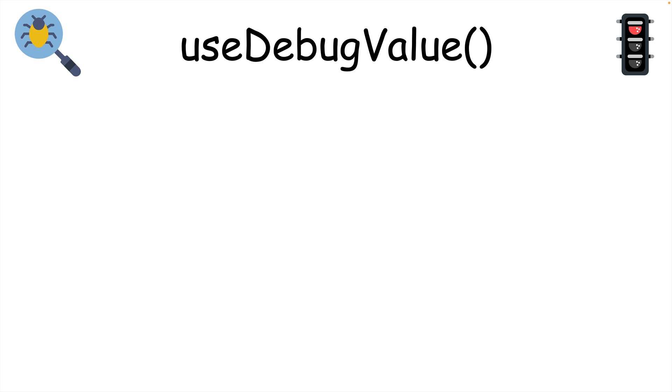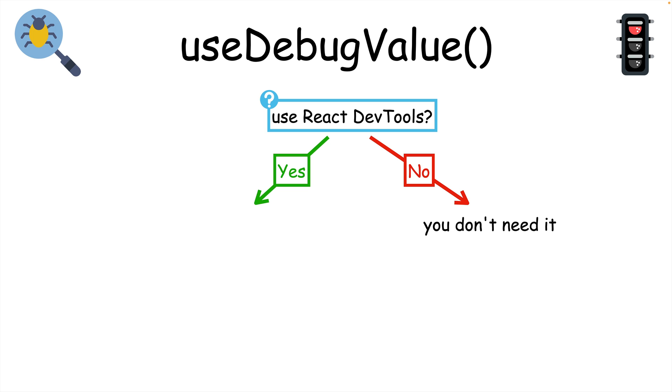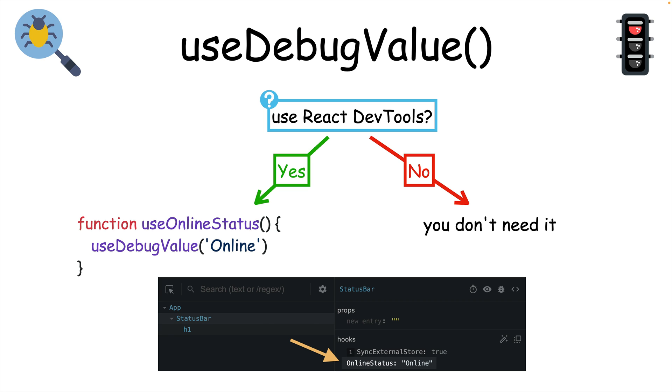The only reason to use a random hook like useDebugValue is if you regularly use React DevTools. If not, then you probably won't ever use it. But if you do and you're using custom hooks, useDebugValue lets you label your custom hooks with whatever string value you pass to them. That way you can find your custom hooks easier in the React DevTools extension.